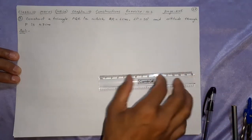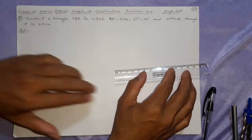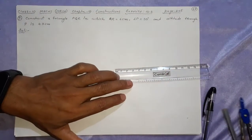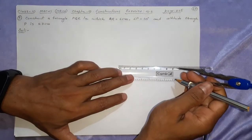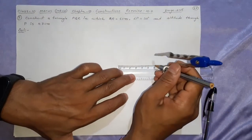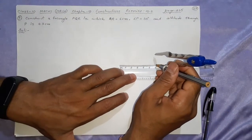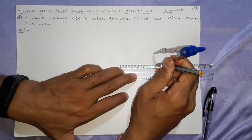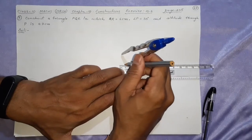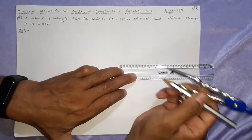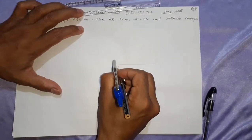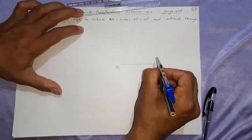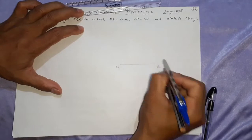So we start by making QR equal to 6 centimeter. This will be Q and this will be R.